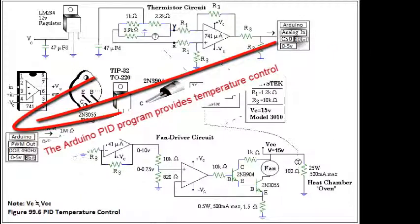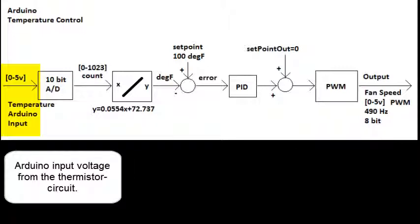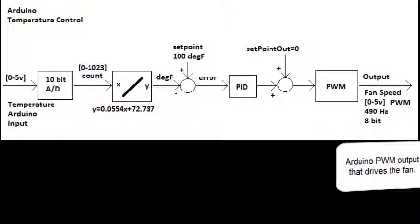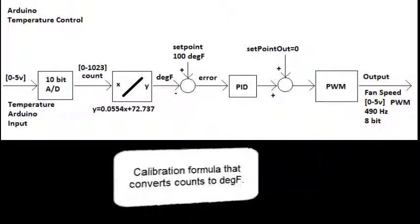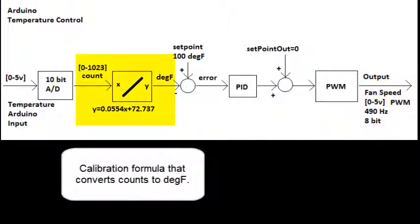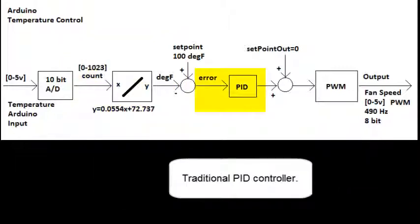Here's a block diagram of the Arduino program. That's the Arduino input voltage from the thermistor circuit and the Arduino pulse width modulation signal that drives the fan. A calibration formula converts counts to degrees Fahrenheit, and a traditional PID controller.